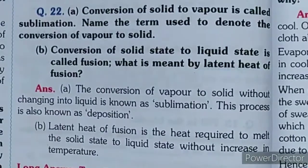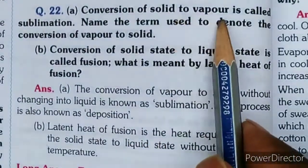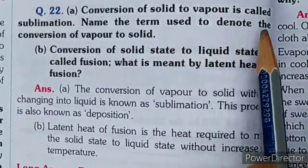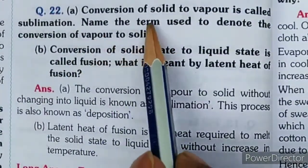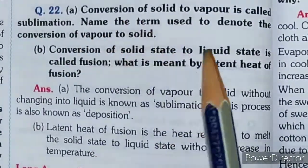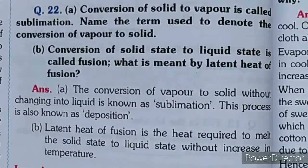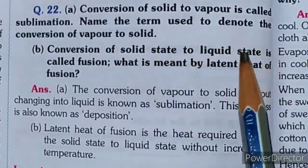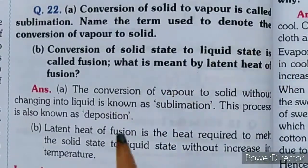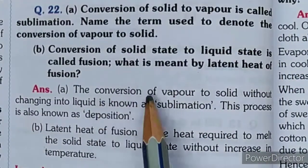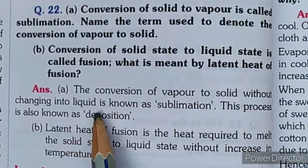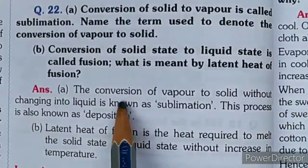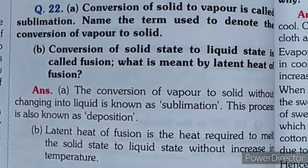Question 22: Conversion of solid to vapor is called sublimation. What is the term used to denote the conversion of vapor to solid? The conversion of vapor to solid without changing into liquid is also known as sublimation. This process is also known as deposition.